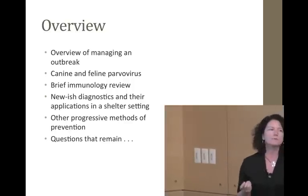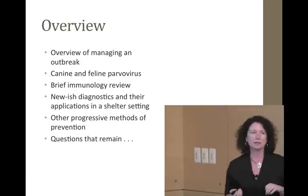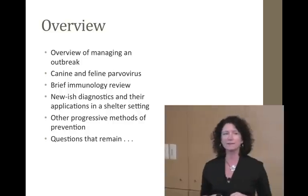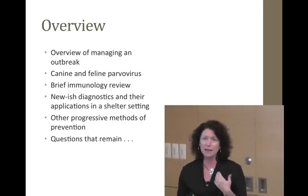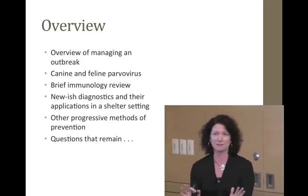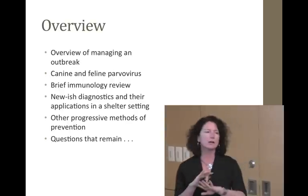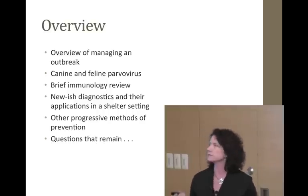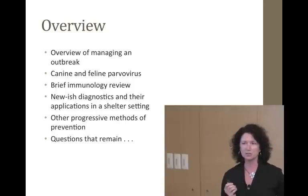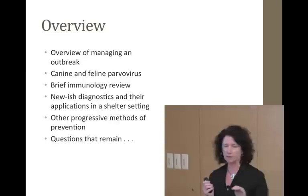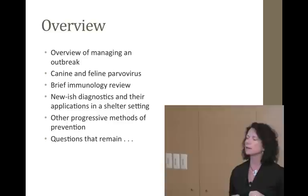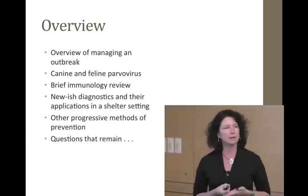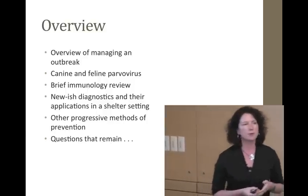Here's an overview: a very brief talk on managing an outbreak, then canine and feline parvovirus — almost nothing about the diseases themselves since you likely have that knowledge. Then immunology 101, maybe two or three slides, just to make sure we're all on the same page. After that, newer diagnostics — the part where I hope to give you new tools and new ways to think about them — and then a few other methods of prevention for canine and feline parvovirus in shelters.